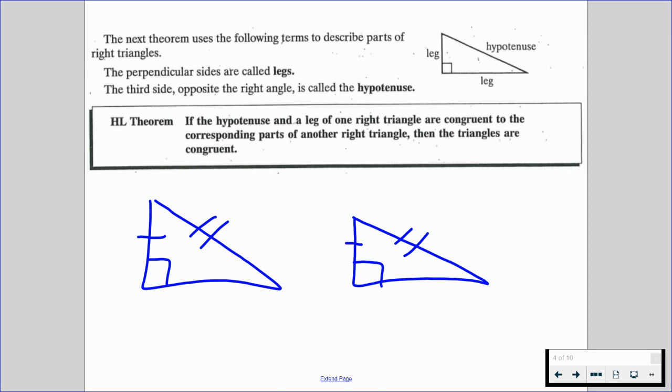But this also is angle-side-side, which previously we said is not a thing. And it's still not a thing for general triangles. But specifically for right triangles, we're able to use hypotenuse-leg. We still, again, do not call it angle-side-side or side-side-angle. It's not called that. It's called HL.